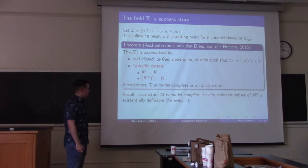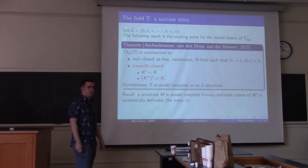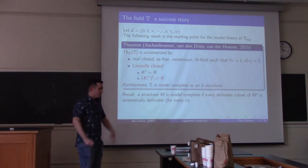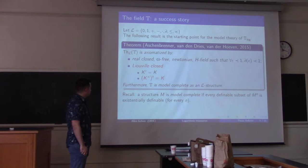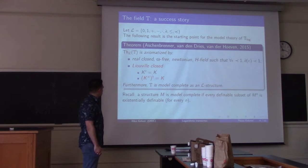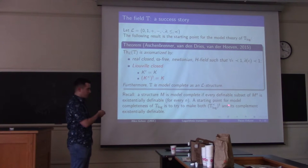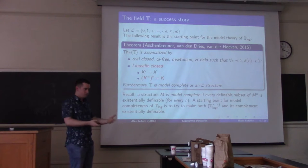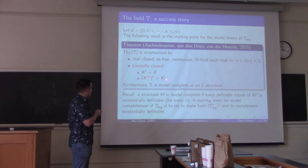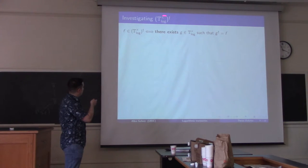Model completeness is the result we're going for with T-log. For the purposes of this talk, model complete means that every definable subset of K^n is actually existentially definable — if you have some definable set with a really complicated definition, you can find another definition which is just an existential quantifier followed by a quantifier-free formula. It's a weak form of quantifier elimination or quantifier reduction. To attempt to get model completeness for T-log, a natural starting point is to zero in on the set of daggers — the set of logarithmic derivatives — and ask: is this set existentially definable? Is its complement existentially definable?